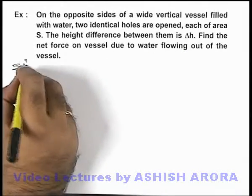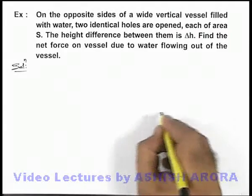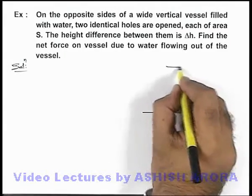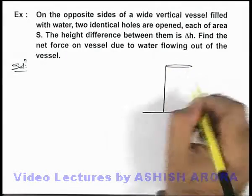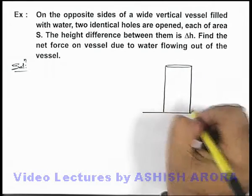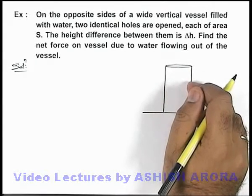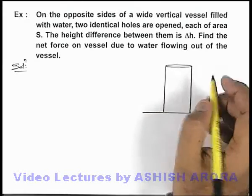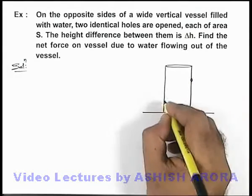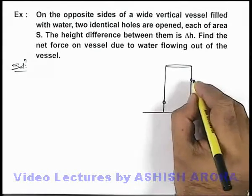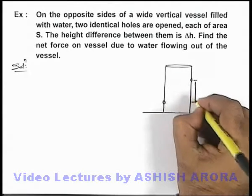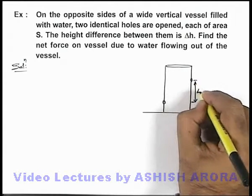In this situation, if we first draw the physical situation, we are having a wide vertical vessel, and on the two opposite sides two identical holes are opened, one is opened here and the other is opened here, and it is also given that the level difference in the two holes is delta h.